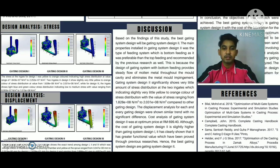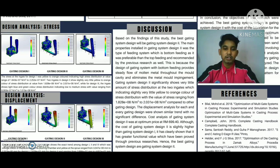Based on the findings of this study, the best gating system design is gating system design 2. The main property of gating system design 2 is the type of feeding system, which is bottom feeding, as it is preferable and recommended by previous research. This is because the design of gating system with bottom feeding provides a steady flow of molten metal throughout the mold cavity and eliminates metal-mold impingement.